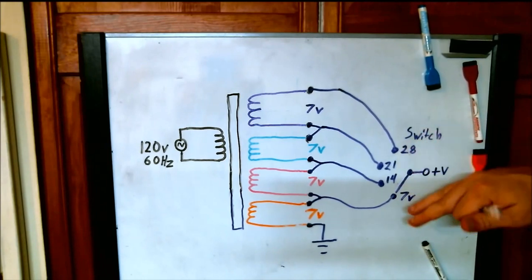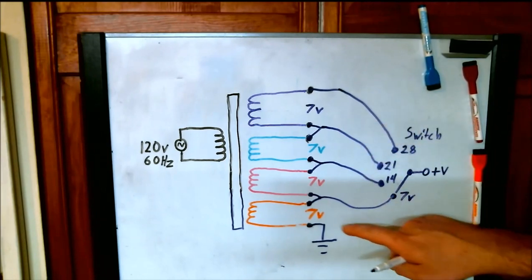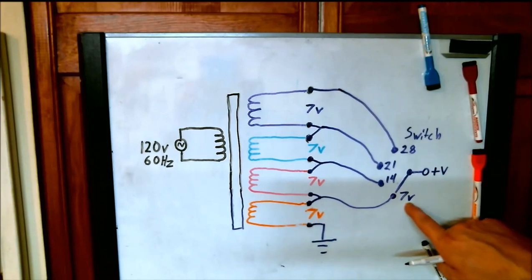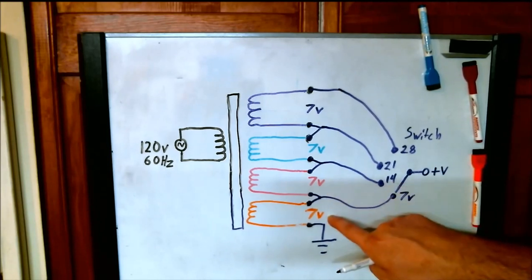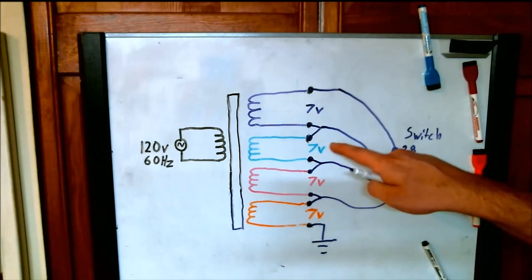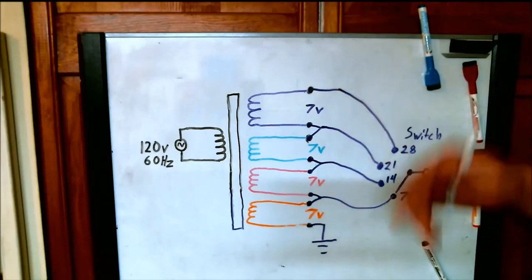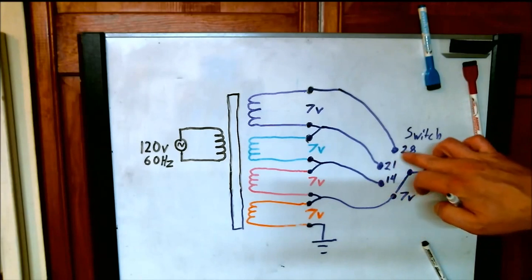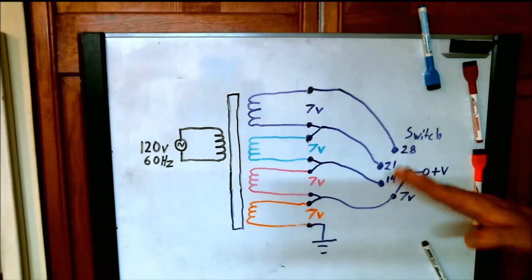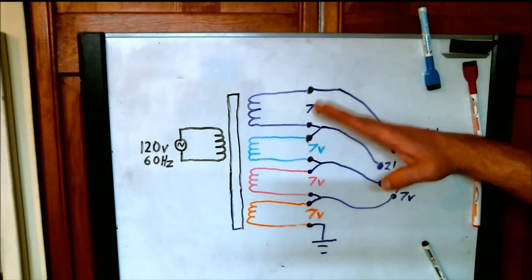Now why they increase in increments of 7 is quite obvious. Because 7 equals 7. 7 plus 7 is equal to 14. 7 plus 7 plus 7 is equal to 21. And 7 plus 7 plus 7 plus 7 is equal to 28. So you can see how they add up.